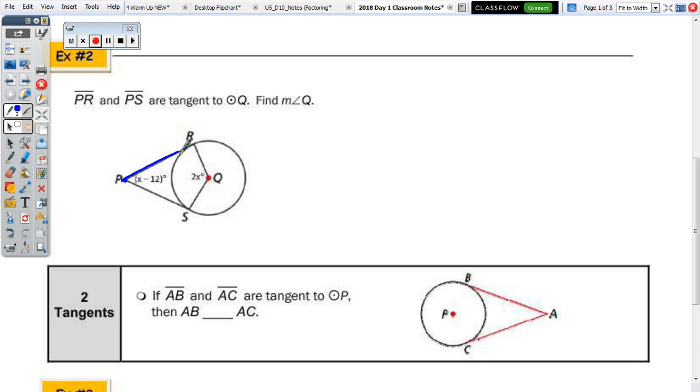So, when you draw PR, we have a radius. So, there is a 90-degree angle at their intersection, because the tangent is perpendicular, as well as tangent PS intersects radius QS. So, there is a 90-degree angle. What's the interior angle sum for a quadrilateral?